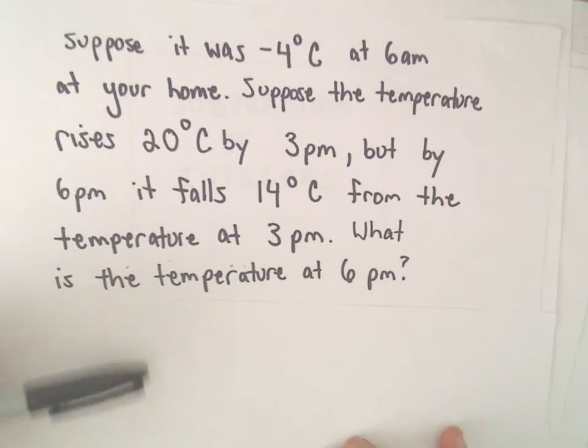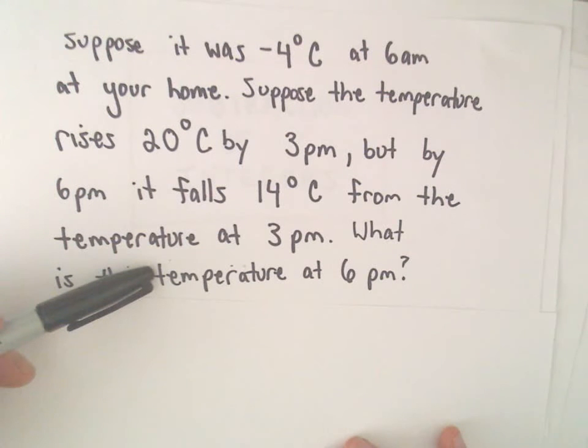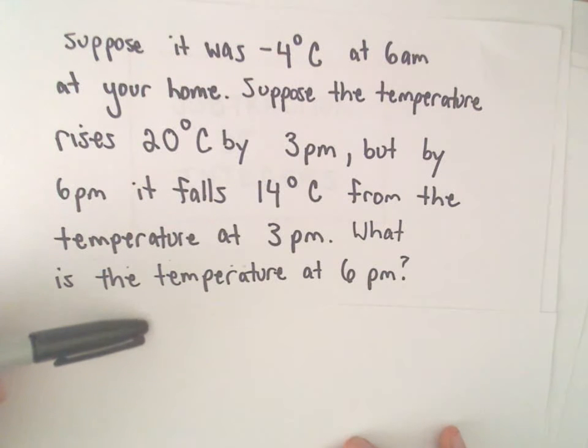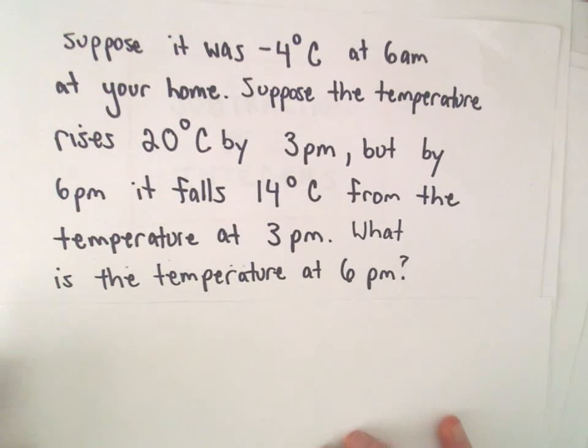And then let's suppose the temperature increases 20 degrees by 3 p.m., but by 6 p.m. it falls 14 degrees from the temperature at 3 p.m. So it kind of makes sense, right? It's cold in the morning, it gets warmer, and then it cools off towards the end of the day. We want to know what's the temperature at 6 p.m.